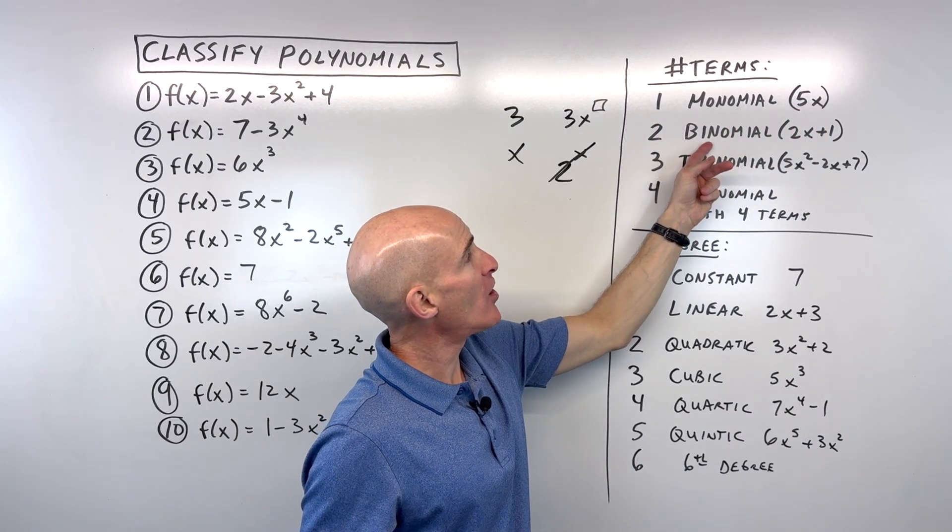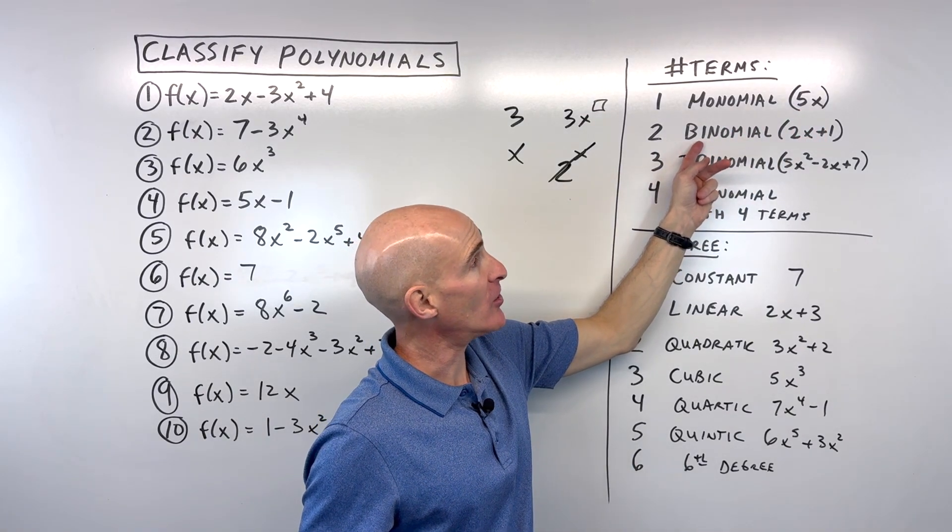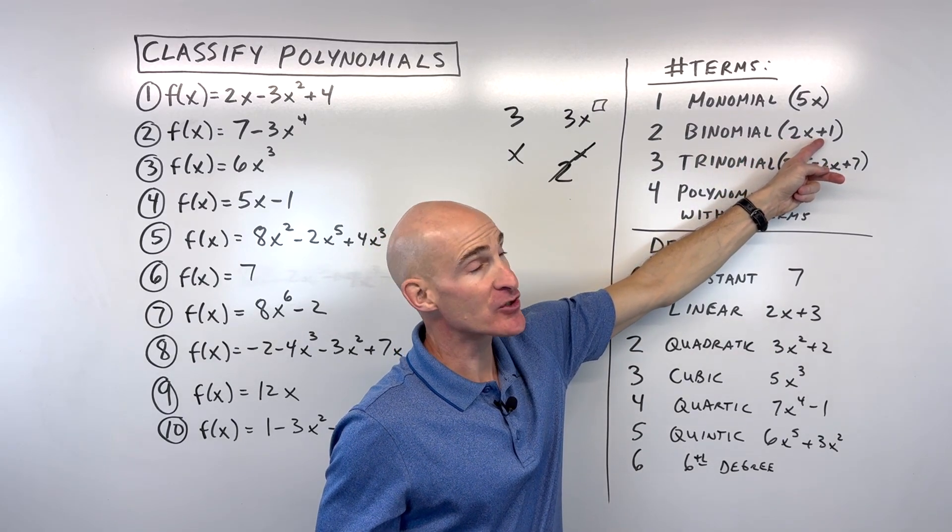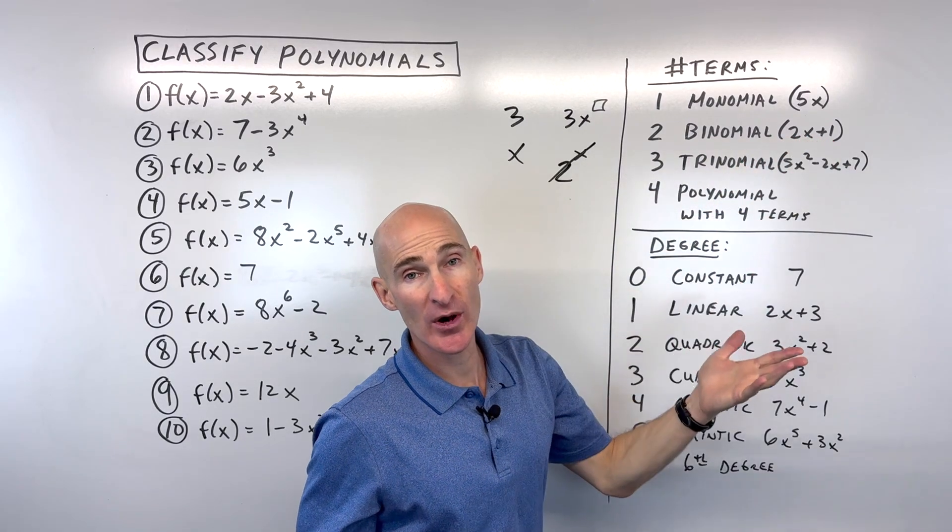But if you have two terms, we call that a binomial, kind of like bicycle, right? Bi for two. And you can see they're separated by that plus or minus sign. So an example might be like 2x plus 1.